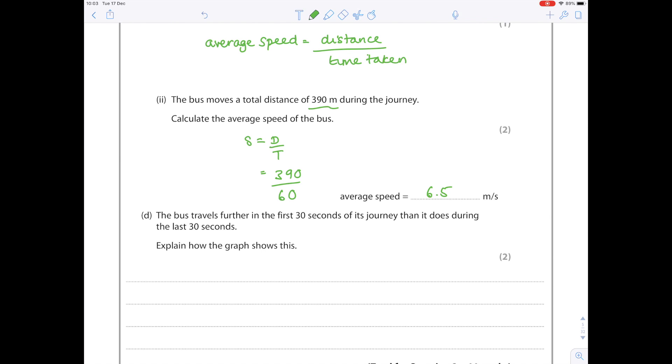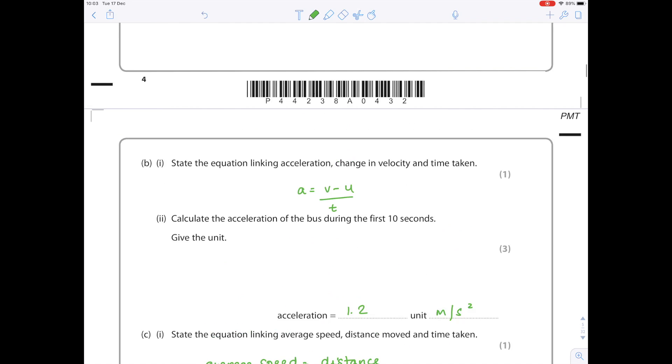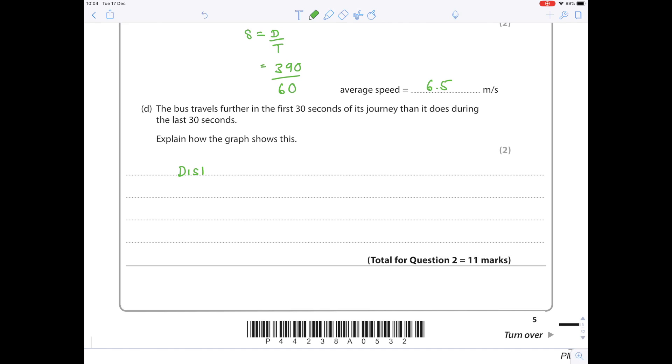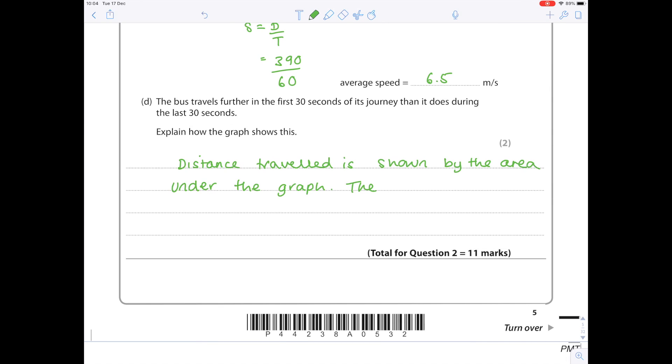The bus travels further in the first 30 seconds of its journey than it does during the last 30 seconds. Explain how the graph shows this. Remember I've already written this pink note telling me that distance is the area under the graph. They're both trapeziums, but you can see the area for the last 30 seconds is much smaller than the area for the first 30 seconds. So distance traveled is shown by the area under the graph, and the area is greater for the first 30 seconds.